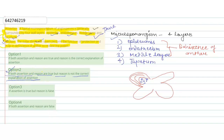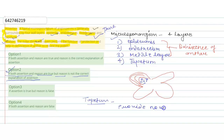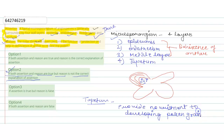Therefore, option two is correct — both assertion and reason are true, but the reason is not the correct explanation of the assertion. This is because in the reason, only three layers are mentioned; tapetum is absent. The main function of tapetum is to provide nourishment to the developing pollen grains, and this is not mentioned in the reason.